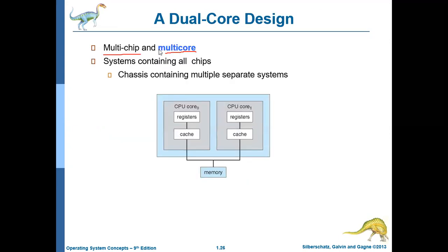There is another type of multiprocessing called multi-core. Some of you may have a laptop with multi-core or dual-core. In a multi-core system, you will have only one chip. As you can see in this diagram, there is only one chip, and this single chip contains two cores. A core is nothing but a processing element. So this particular chip contains two cores — processing element one and processing element two. This is an example of a multi-core multiprocessing system.